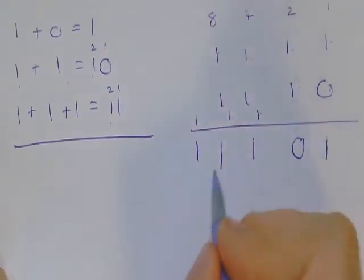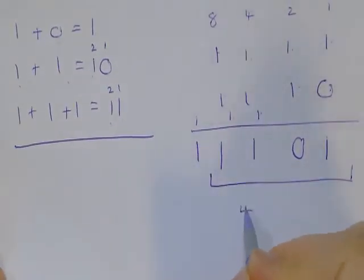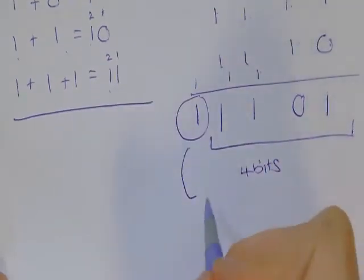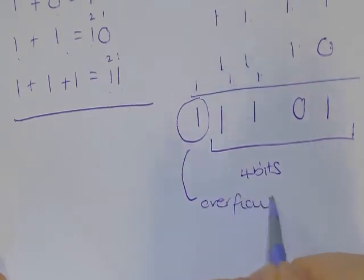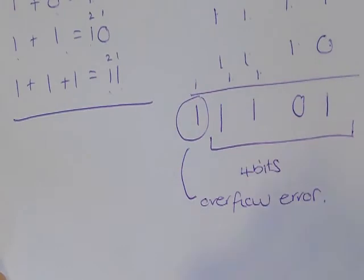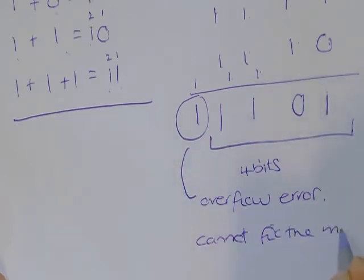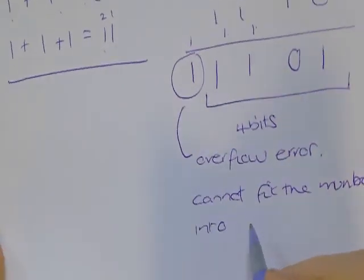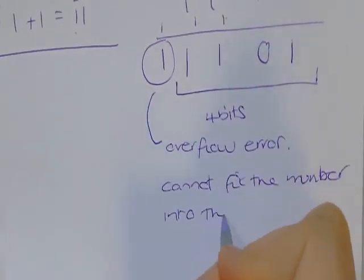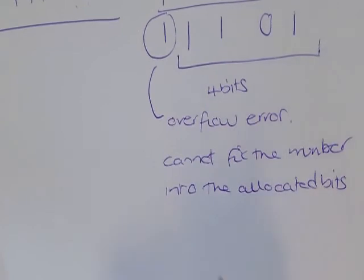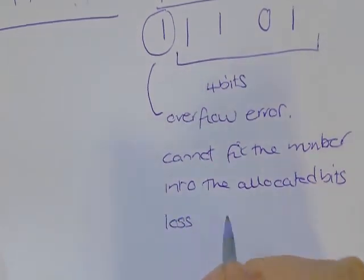Now, if you were told in an exam that you had to fit this into four bits, this is what we call an overflow error, and it means that you cannot fit the number into the allocated bits. It also means you get a loss of accuracy.